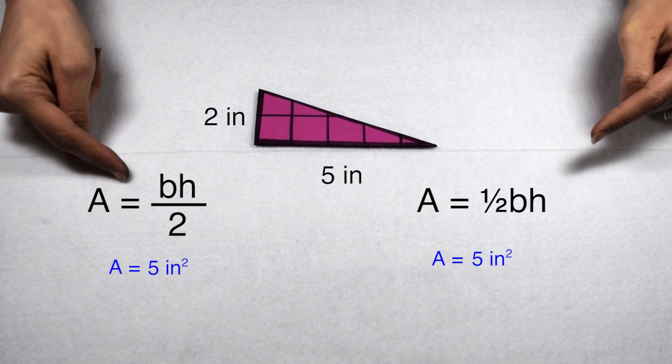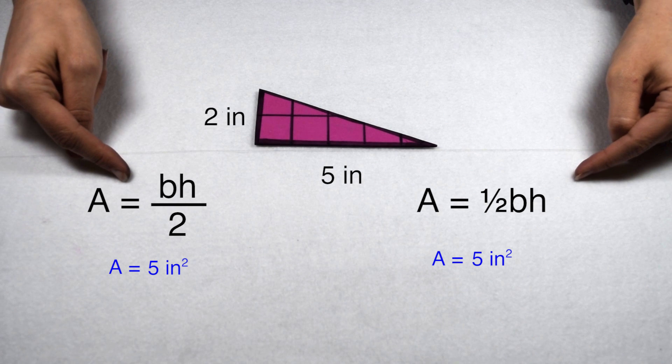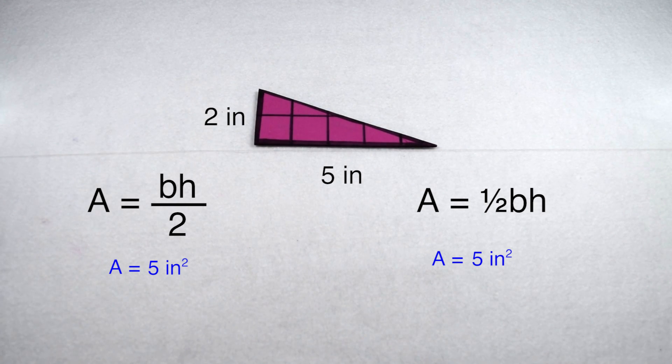So either equation, base times height divided by 2, or one half times base times height, is going to give me the area of a triangle.